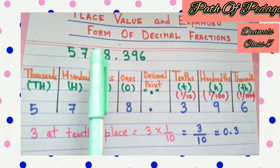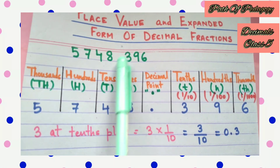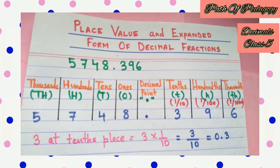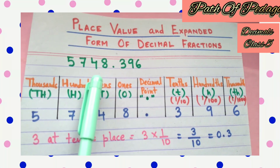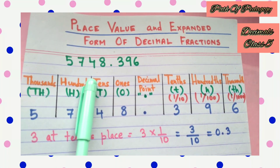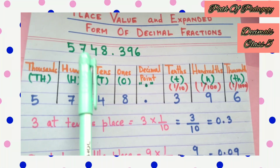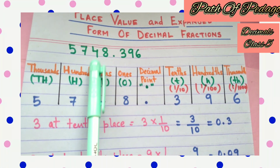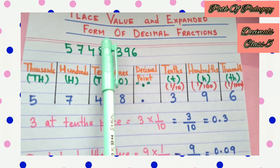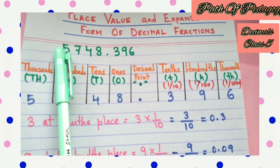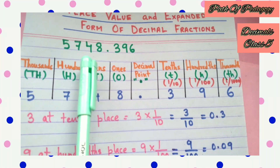5748 is present before the decimal point, so this is the whole part. For the whole number we will follow the Indian place value system, just as you have learnt in the chapter Number System. To identify the place value of each digit of the whole number, you write down: ones, tens, hundreds, thousands — just like the number system we have already learnt.